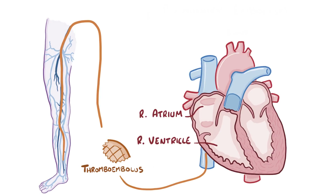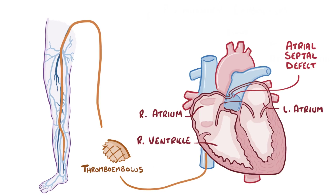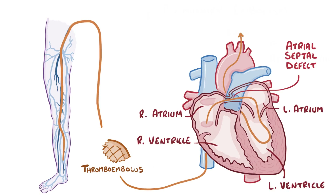Sometimes individuals might have an atrial septal defect, which is a small opening between the right and left atrium. In these individuals, it's possible for a blood clot to go from the right atrium to the left atrium, bypassing the lungs completely. Unfortunately, the clot goes into the left ventricle and can get pumped out to the body, often heading towards the brain and cutting off a blood vessel serving the brain, which can cause an embolic stroke. Because of this, if someone has a pulmonary embolism, it's important to check for an atrial septal defect.